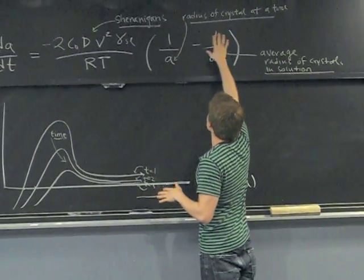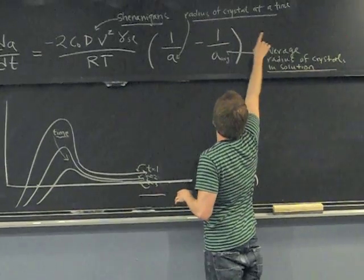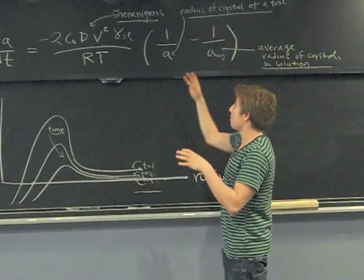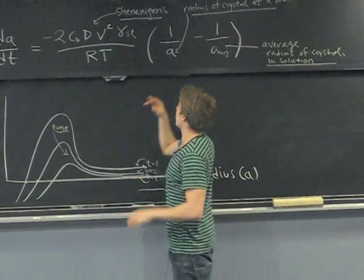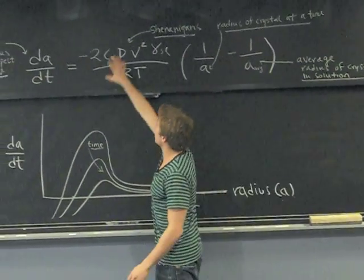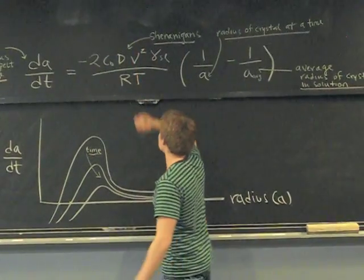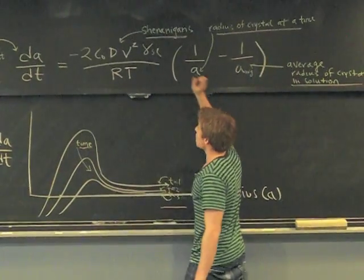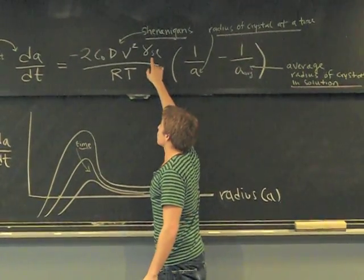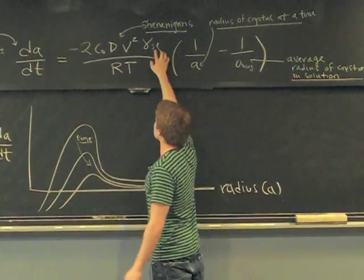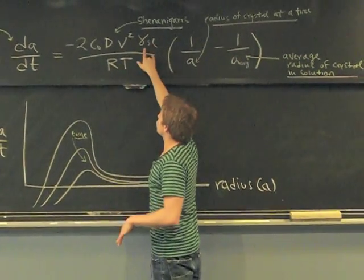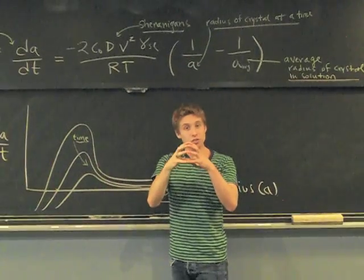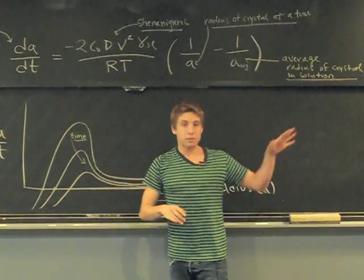Now we also talk about different radii of crystals at a given time. So we talk about small crystals with small radii, big crystals with big radii. Now this is a big shenanigans as I call it. This is a bunch of different constants. But it deals with stuff that we mentioned earlier. This term is a surface energy term. It talks about the surface energy between the solid and the liquid phase, the solid ice crystal and the liquid cream and sugar phase.